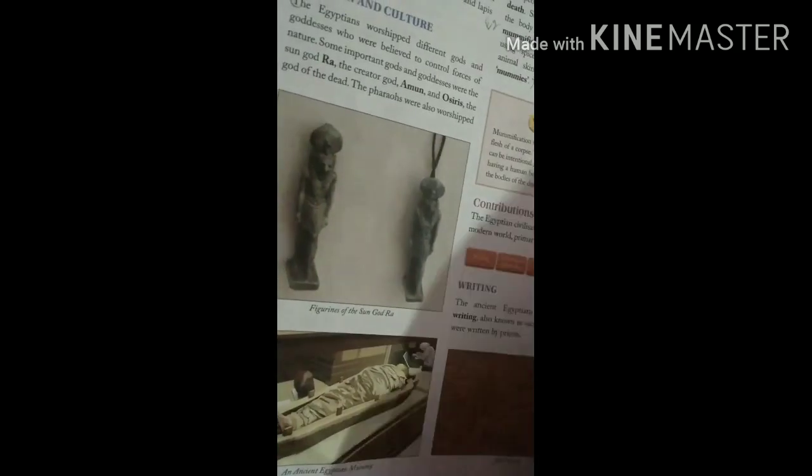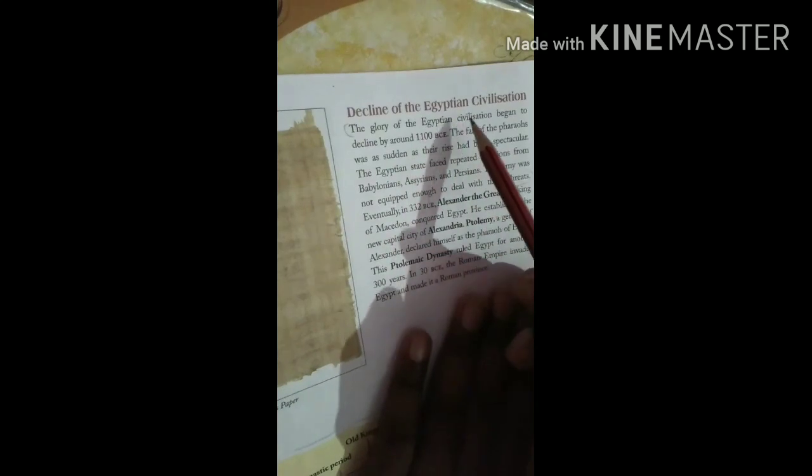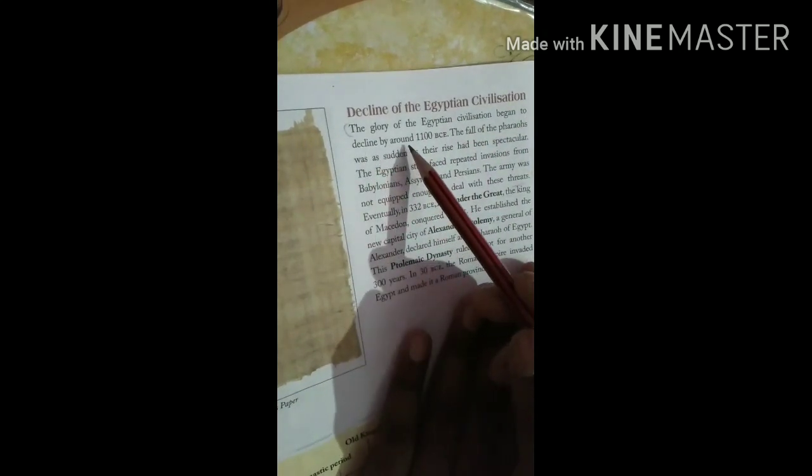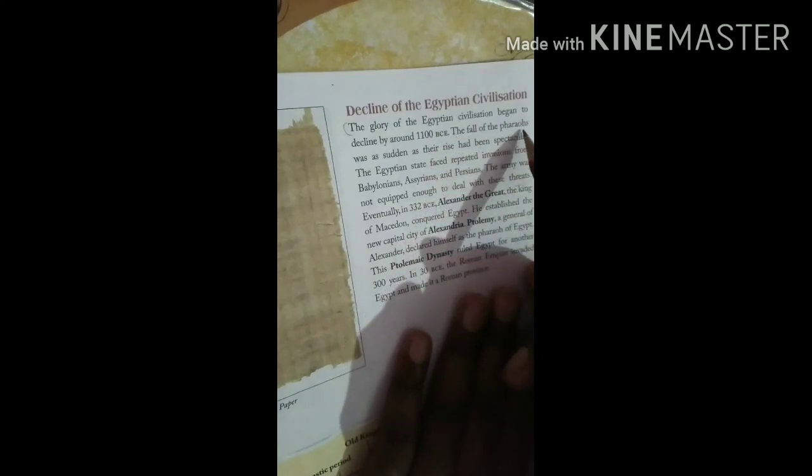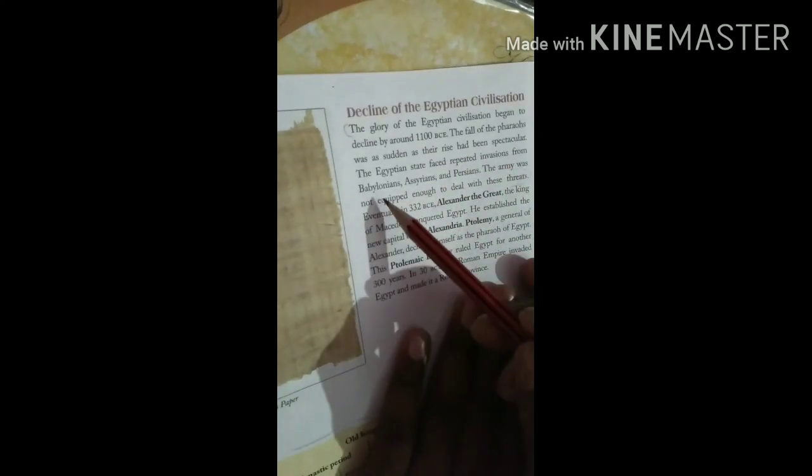Now last question. What led to the decline of the Egyptian Civilization? This is on page number eighteen. The glory of the Egyptian Civilization began to decline by around 1100 BCE. The fall of the Pharaohs was as sudden as the rise had been spectacular. The Egyptian state faced repeated invasions from Babylonians, Assyrians, and Persians. The army was not equipped enough to deal with the threats.